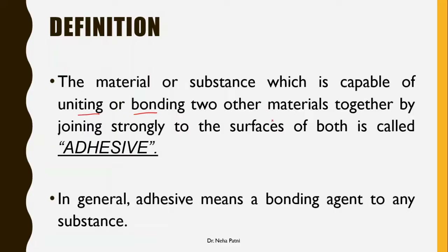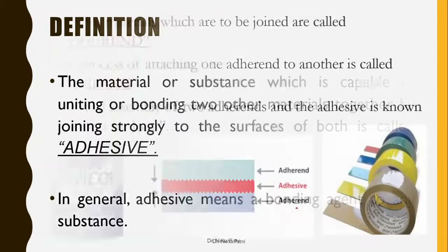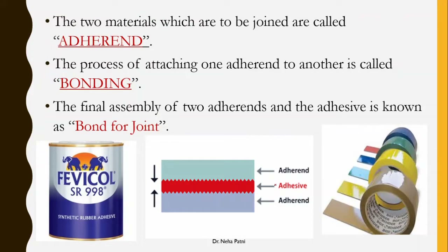The two materials are joined together by that particular chemical which is a bonding agent — that substance is known as the adhesive. You might have used adhesive in your daily life. When you join two things together, these two surfaces are known as adherents.